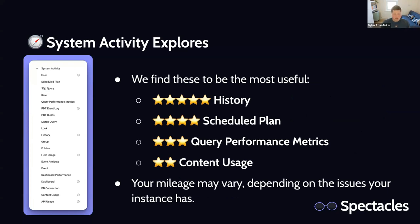There are 20 explorers here. I've highlighted in descending order the four that we find most useful. The first is the history explorer. The base of that explorer is a record for every query that has been run through your Looker instance. So if you want to find the longest-running explorers, slowest queries, how fields are being used — all of that you can find in the history explorer. We're in the process of building out diagnostic stuff into Spectacles for customers, and the history explorer is going to be the base for probably 80% of the analysis we'll provide.